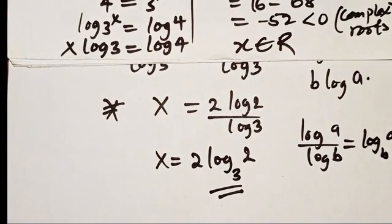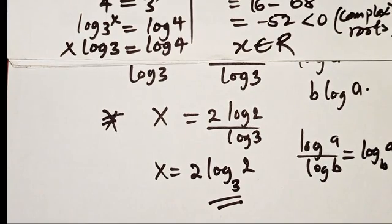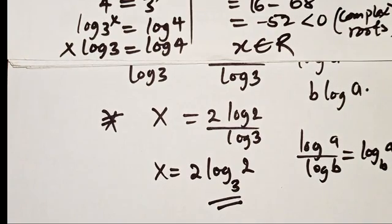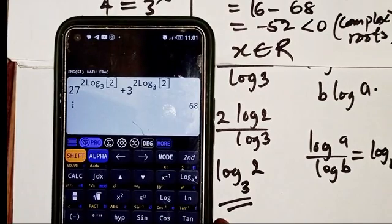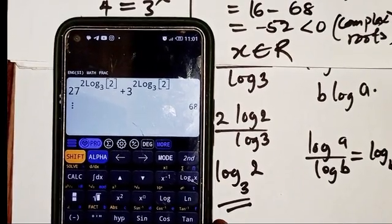If you found this tutorial interesting, please subscribe to our YouTube channel and hit the bell icon to be notified of new content. You can verify the answer by substituting x = 2·log_3(2) back into the original equation using a calculator — it gives 68, confirming the solution is correct. Thank you for watching!